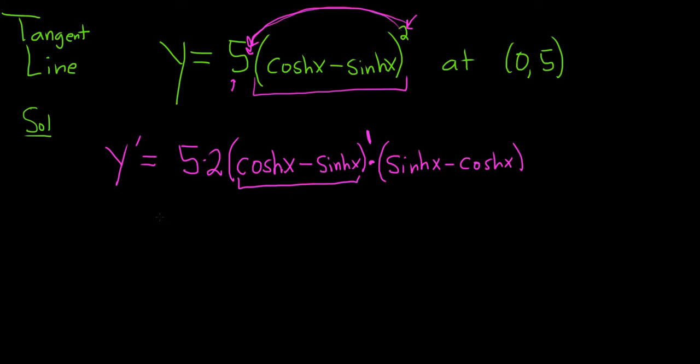Okay, so now we can just go ahead and plug in x. Our x value is 0, so y prime of 0. Notice the notation - this indicates to the reader that you're plugging in a number. 5 times 2 is 10.